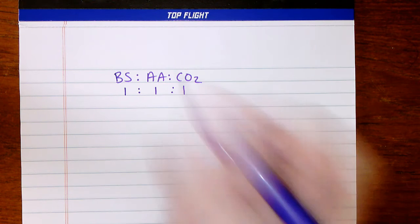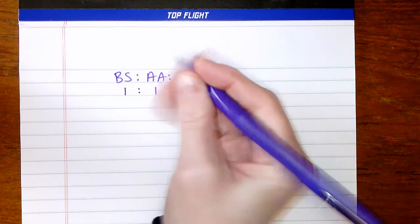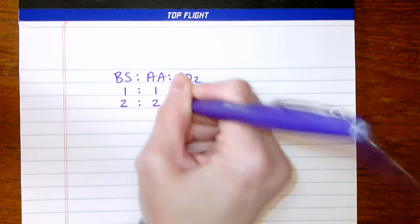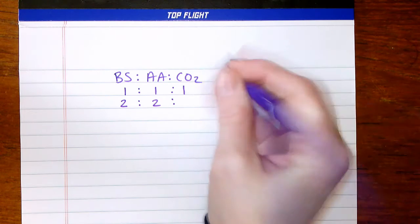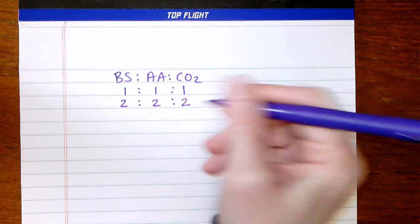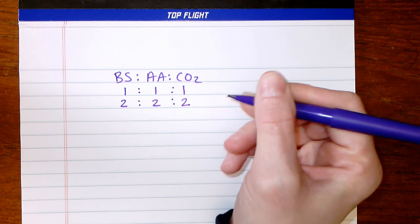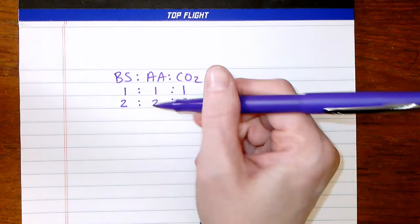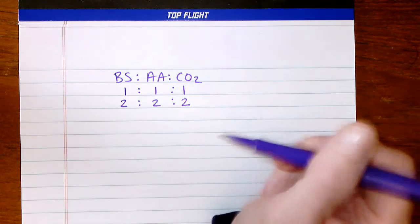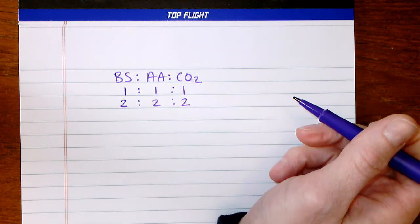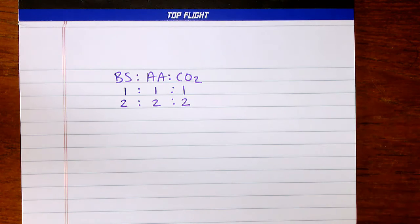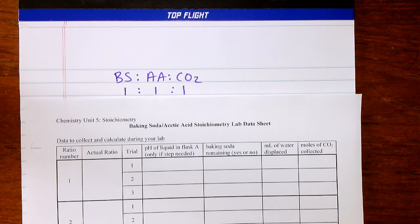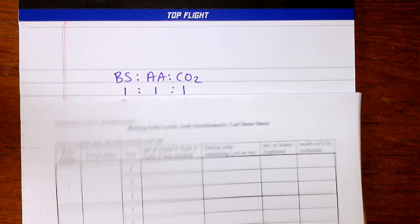As long as the number of moles of acetic acid and baking soda are the same, we'll end up with the same number of moles of carbon dioxide and no excess reactant. But as soon as these are different values, we have excess reactant — and that's what we're using these two columns to think through.